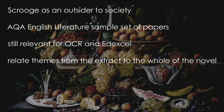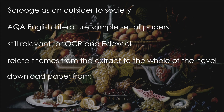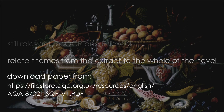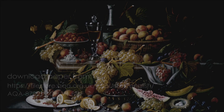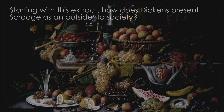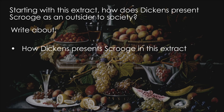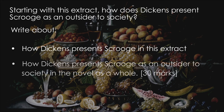The exam paper, including the extract, can be downloaded from the AQA website at the following address, and I've provided a link in the description section under the video. In the AQA paper, the question is as follows: Starting with this extract, how does Dickens present Scrooge as an outsider to society? Write about how Dickens presents Scrooge in this extract, and how Dickens presents Scrooge as an outsider to society in the novel as a whole. 30 marks.